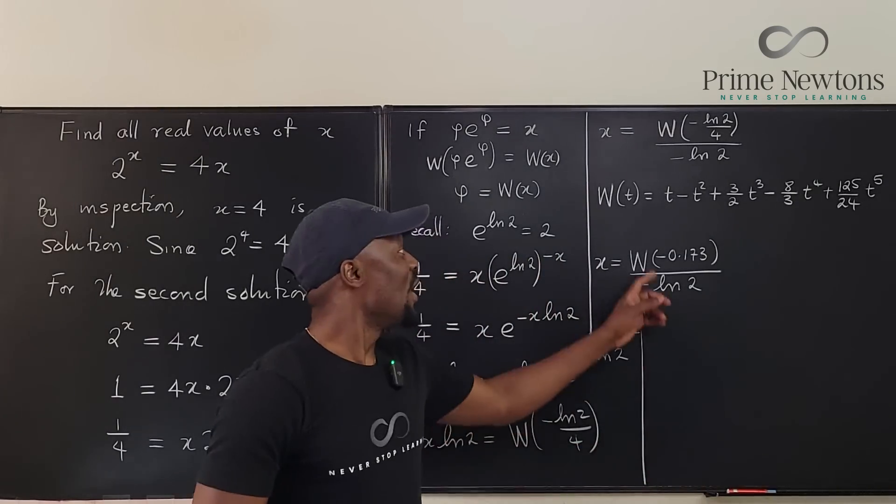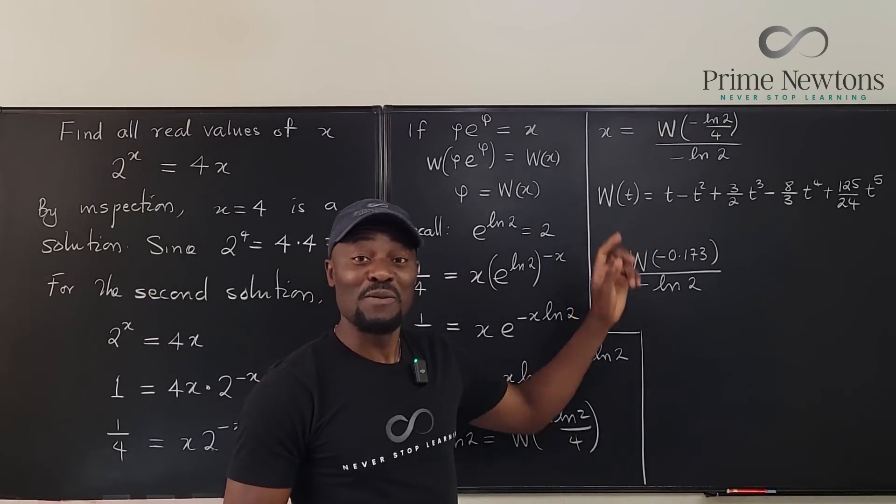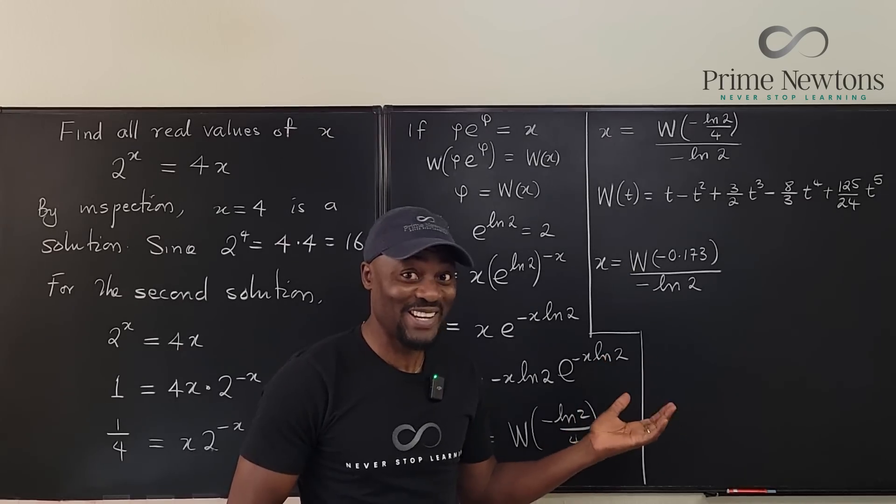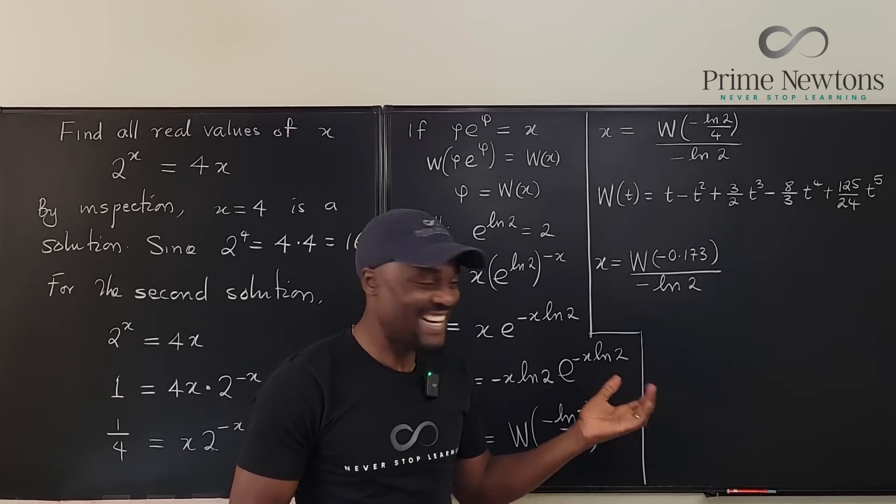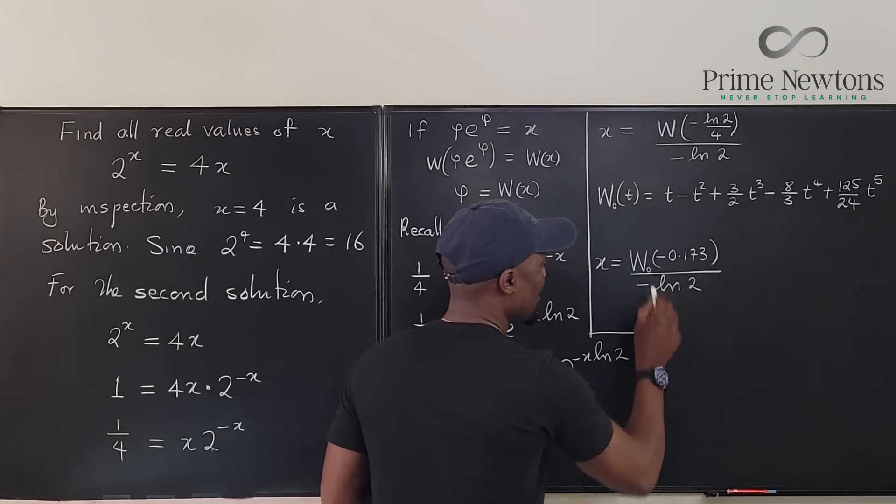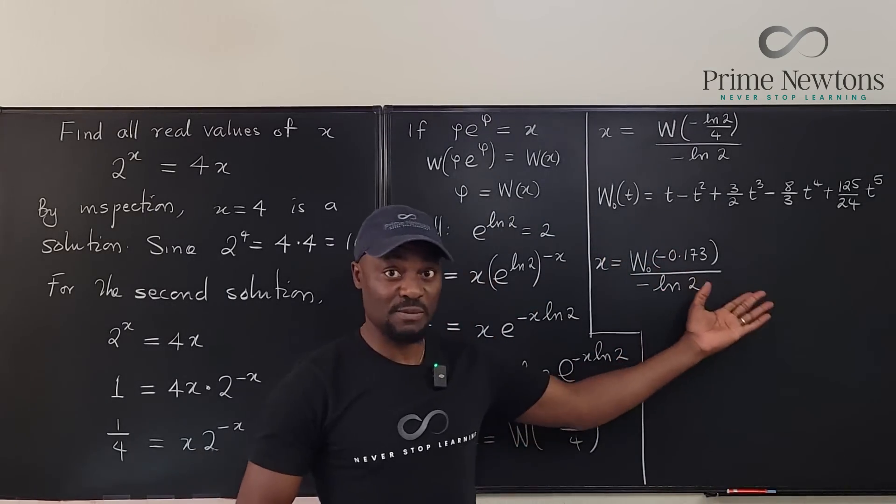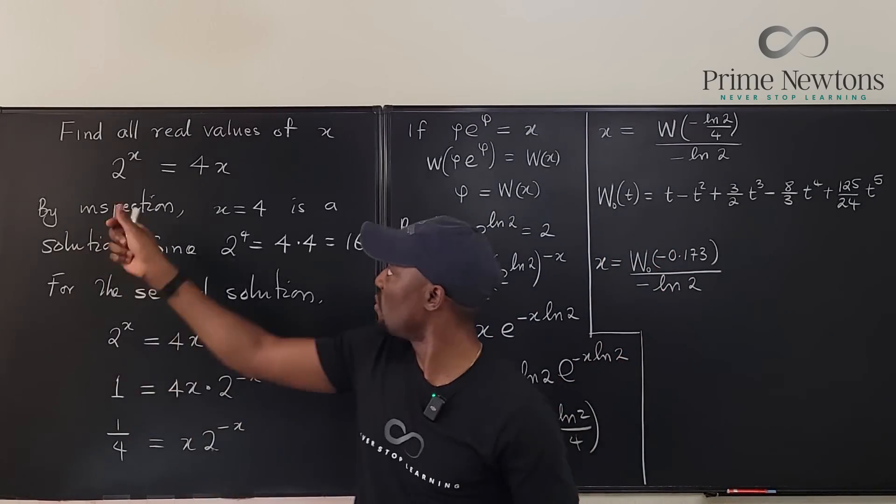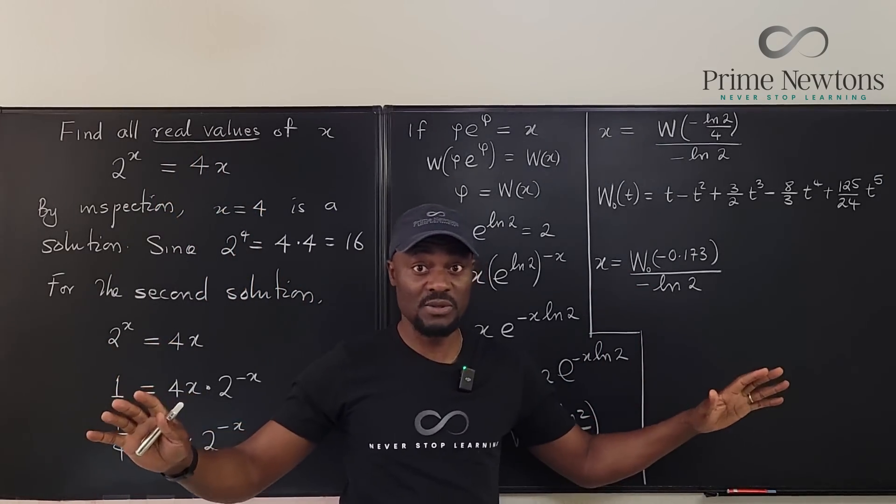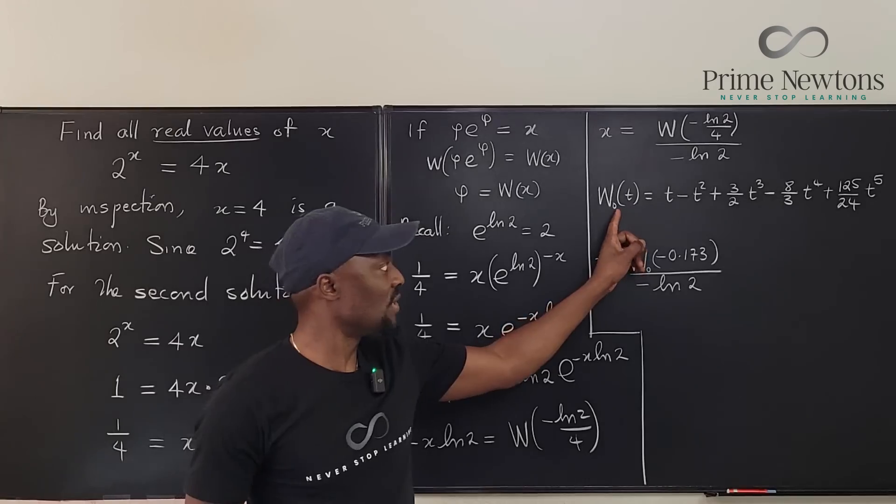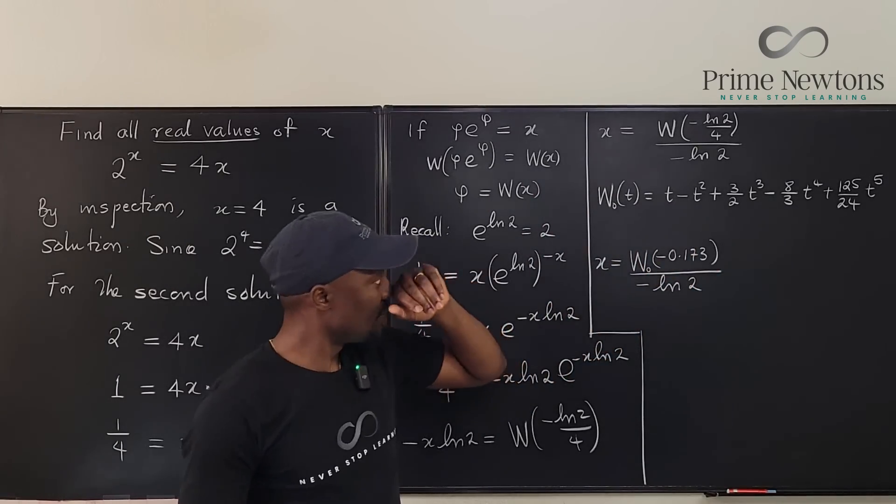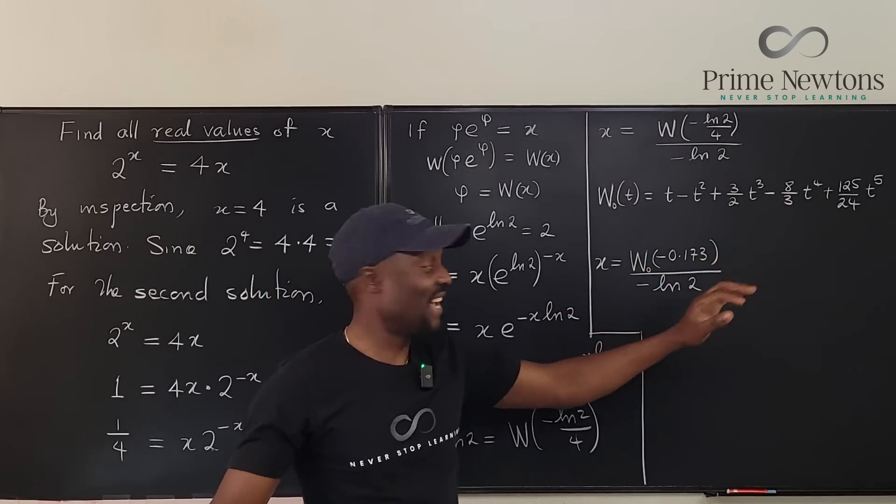By the way, this only works for the principal branch of the Lambert W function. It is the principal branch of the Lambert W function that this works for. Because that's where we expect to get real solutions. Remember, we're looking for real values. Once you go to other branches, they start giving you complex solutions. So, here, you want to stick to the principal branch, and that's what we're using. Because x is real, t is real, everything is real.